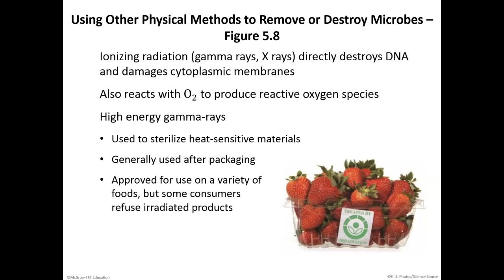Irradiation utilizes ionizing radiation to kill spoilage microbes off of fruits and vegetables, which allows us to store them for a longer period. If you've ever purchased fruits or vegetables from a farmers market, you know they go bad a lot quicker than those from the store. That doesn't mean they're worse fruits or vegetables — they just have not been irradiated. Irradiation allows us to store those items for weeks.